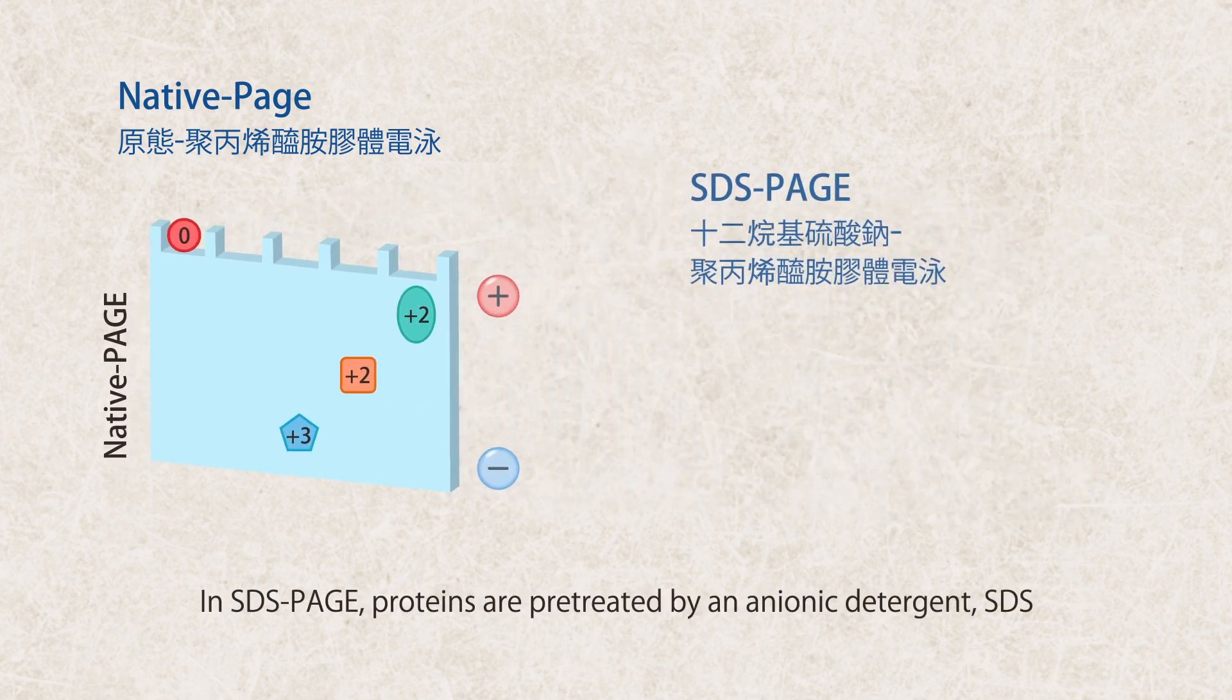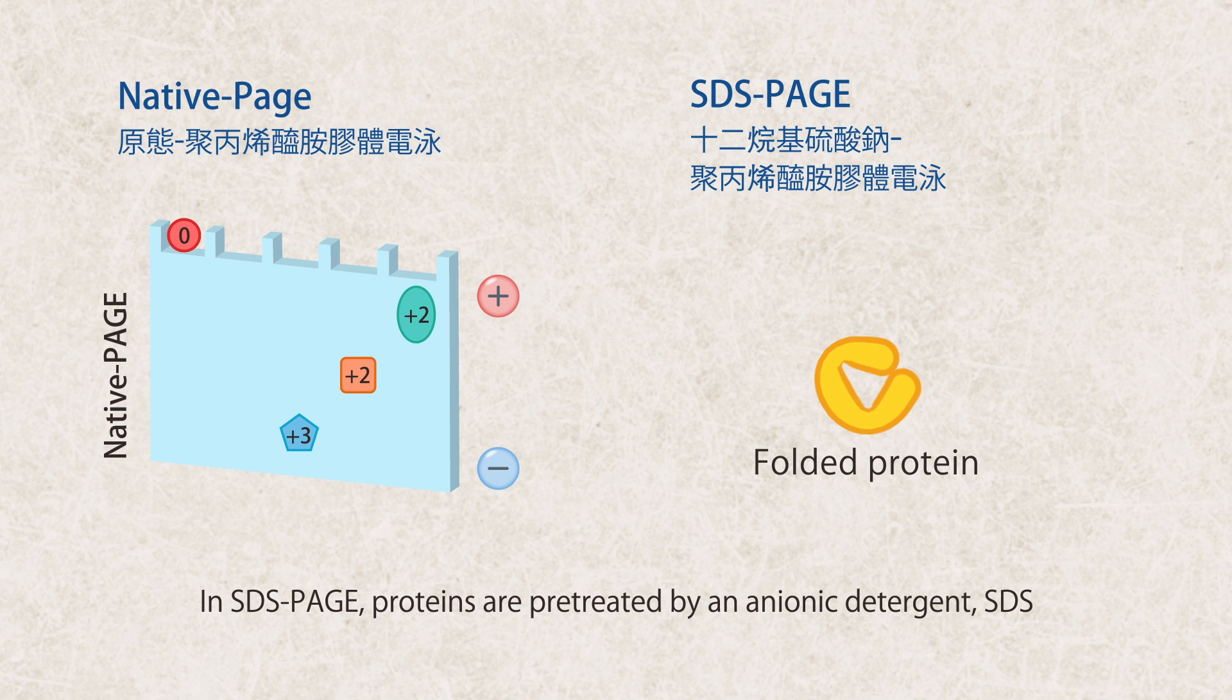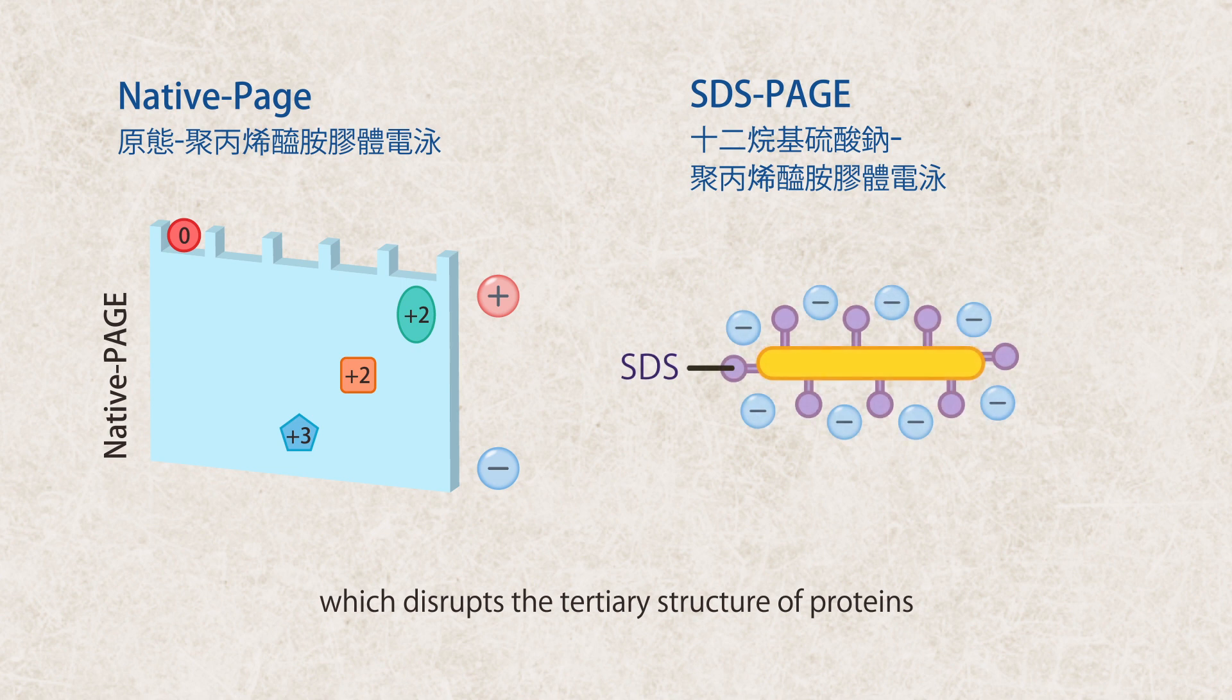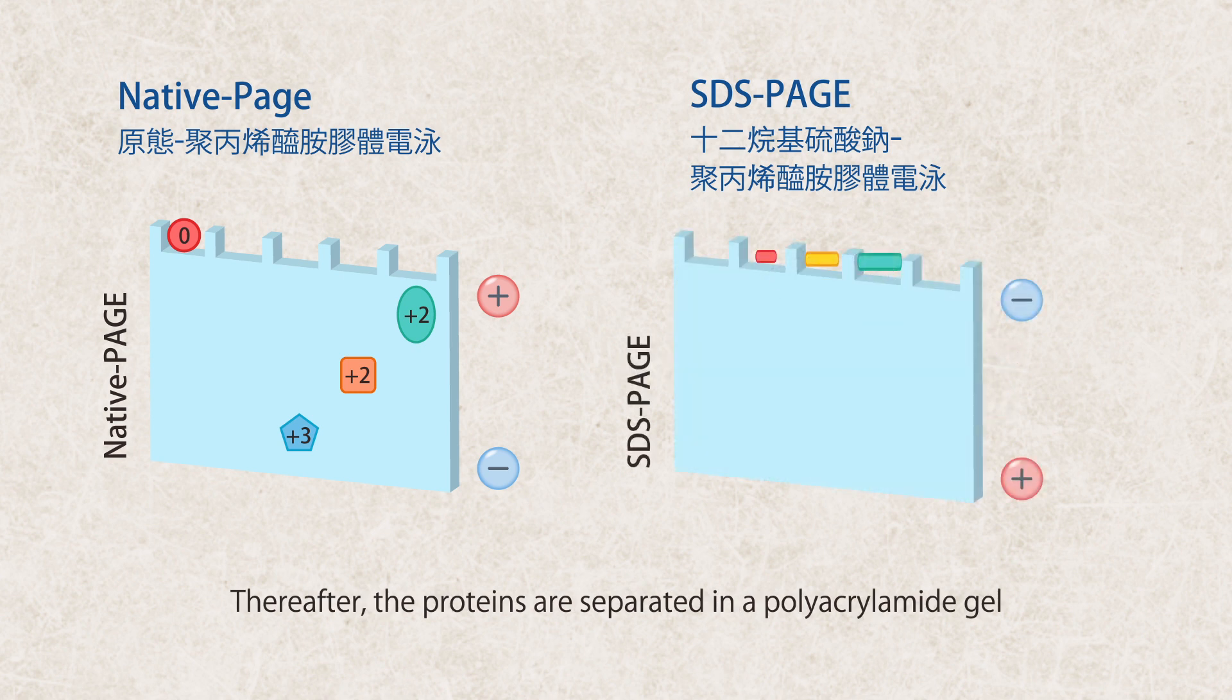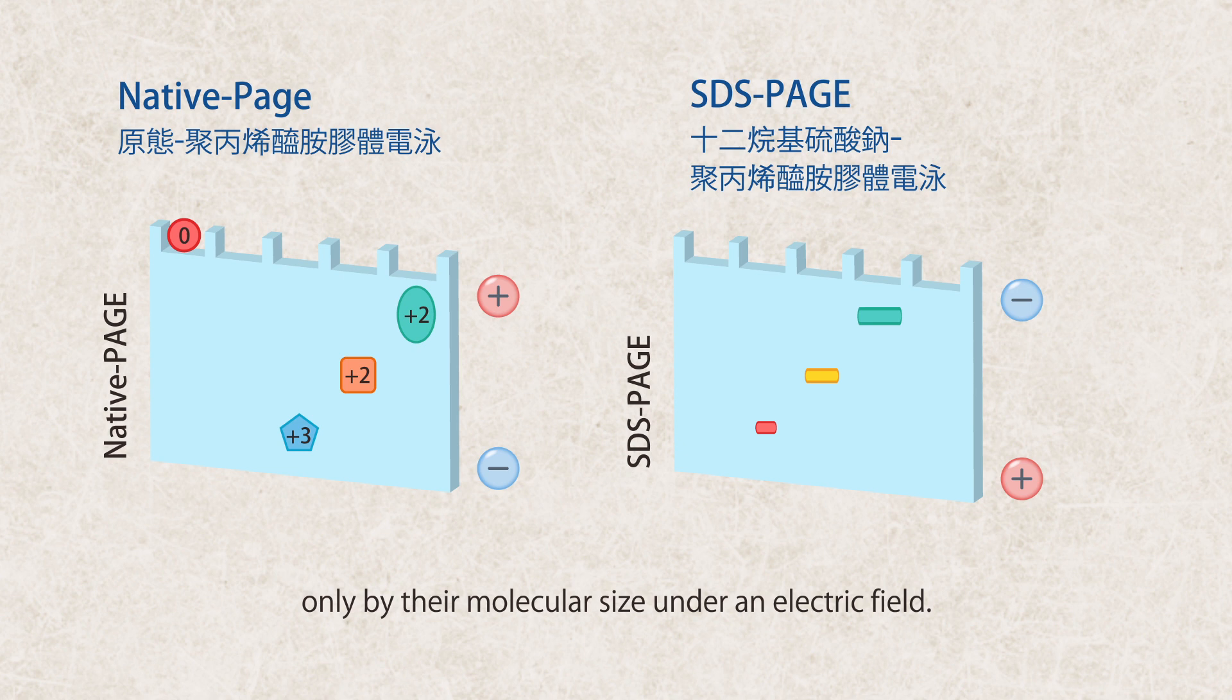In SDS-PAGE, proteins are pretreated by an anionic detergent SDS, which disrupts the tertiary structure of proteins and gives proteins a uniform negative charge. Thereafter, the proteins are separated in a polyacrylamide gel only by their molecular size under an electric field.